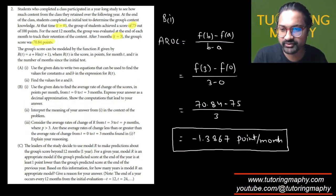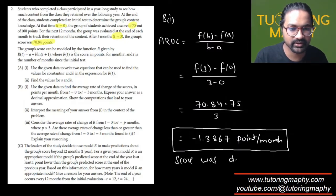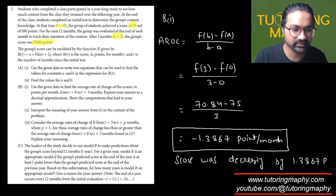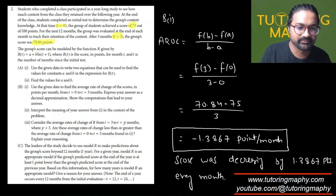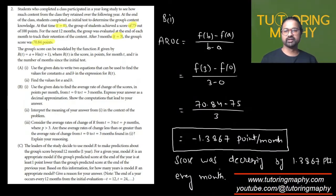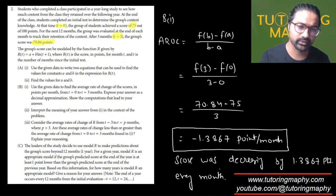Interpret the meaning in the context. I'm talking about part 2. So interpret the meaning means it means that in the first 3 months, in every month, the score was decreasing by 1.3867 points every month for the first 3 months. So the interpretation is for the first 3 months, the average decrease was 1.3867 points. That will be the average change.